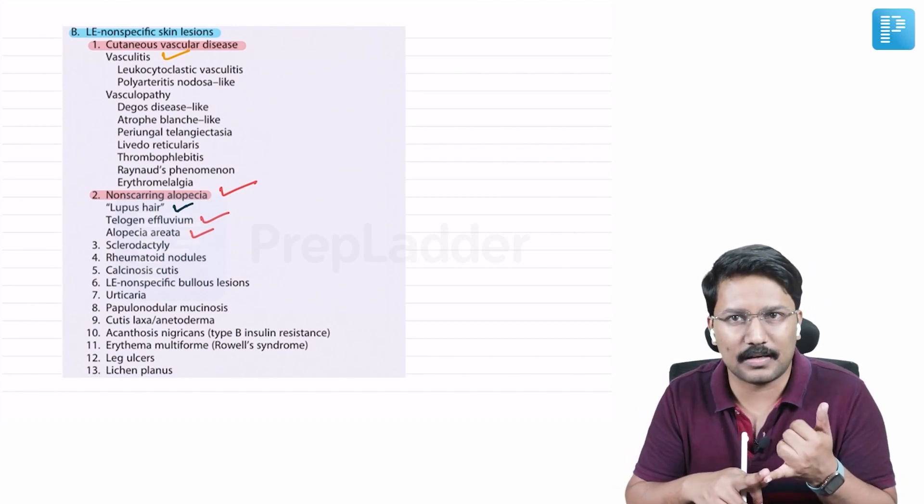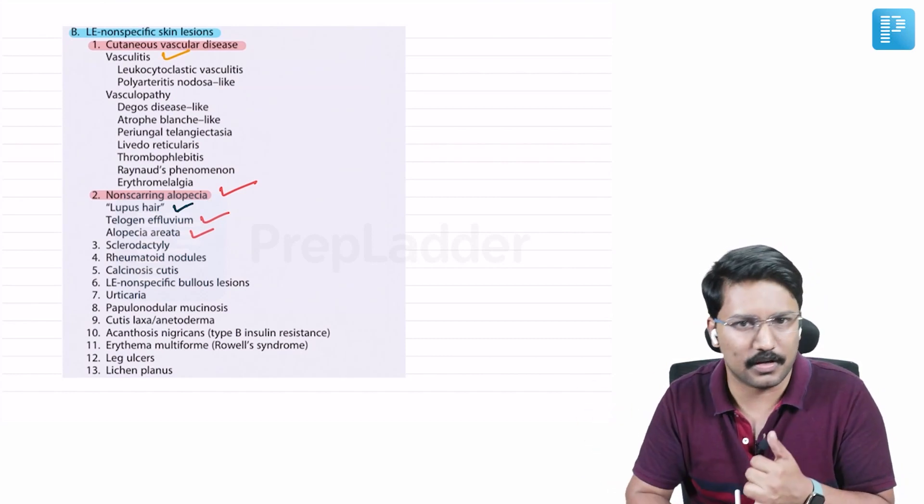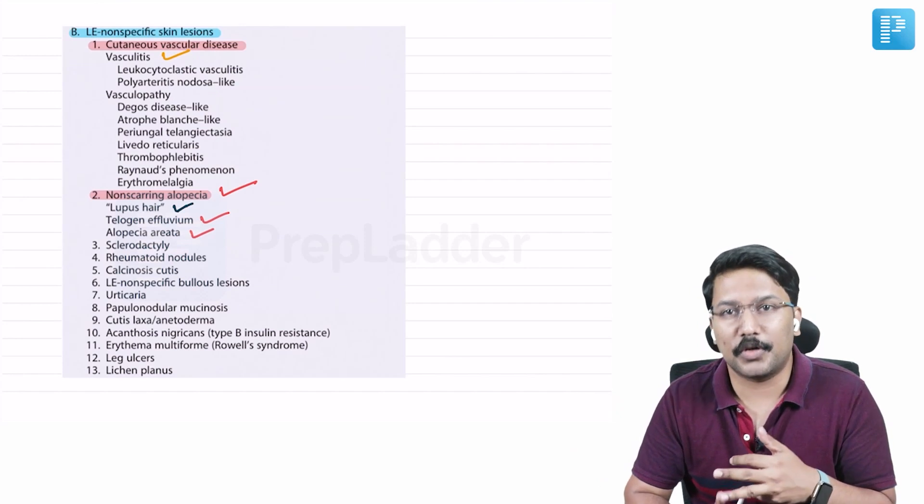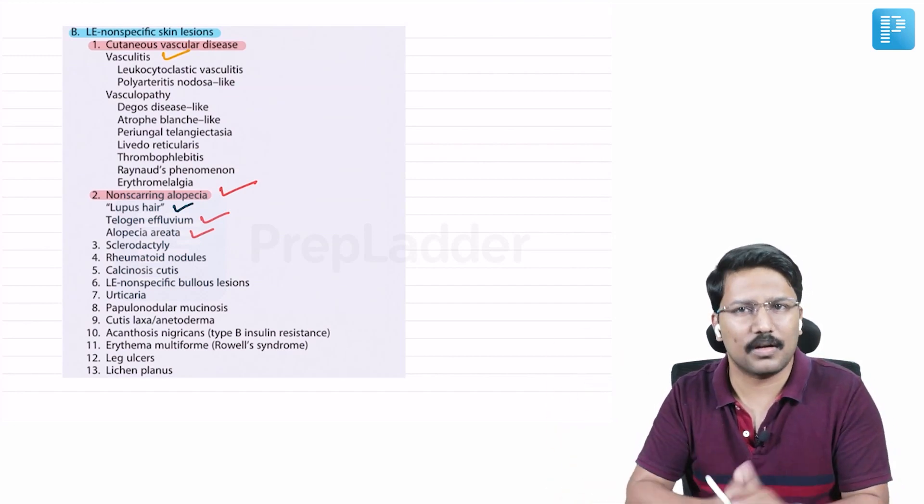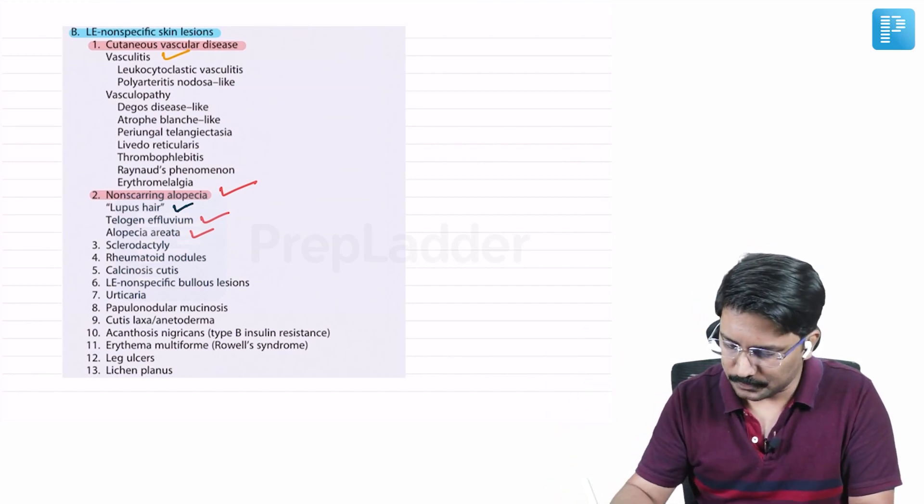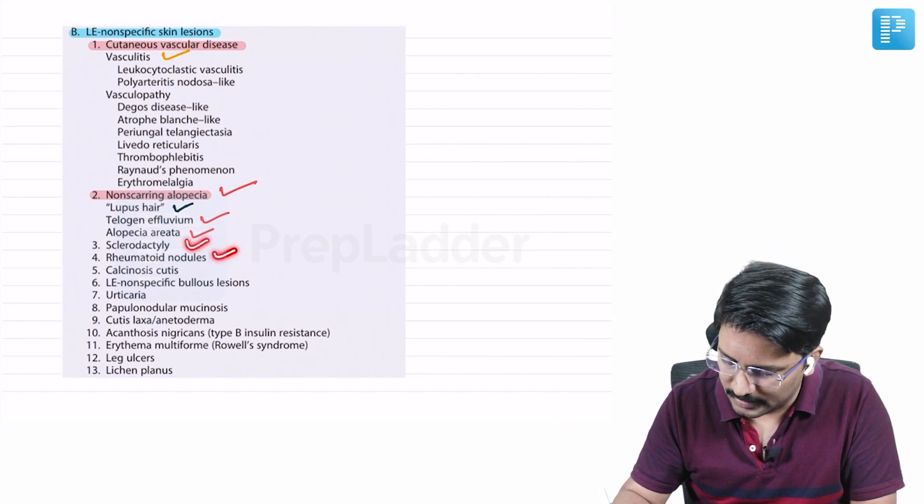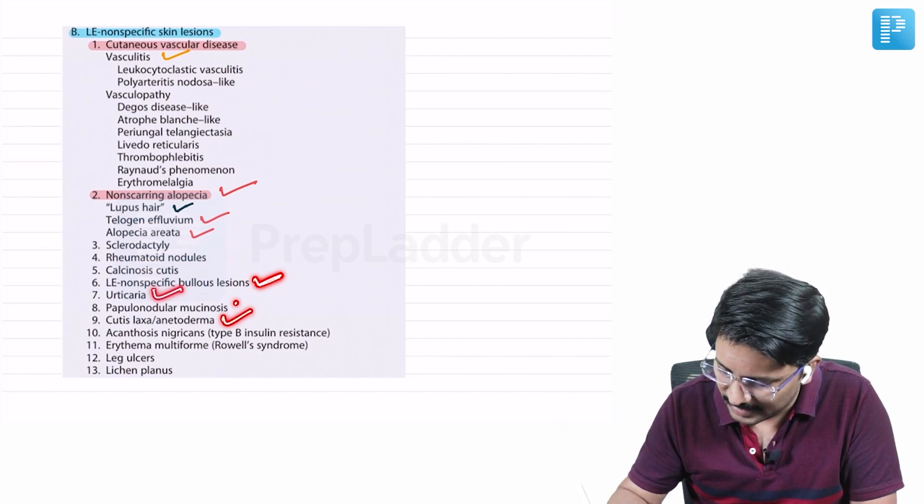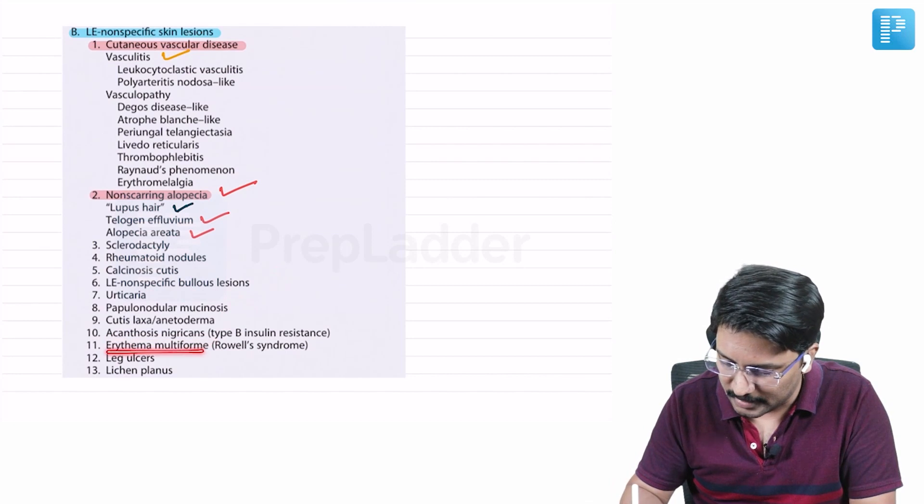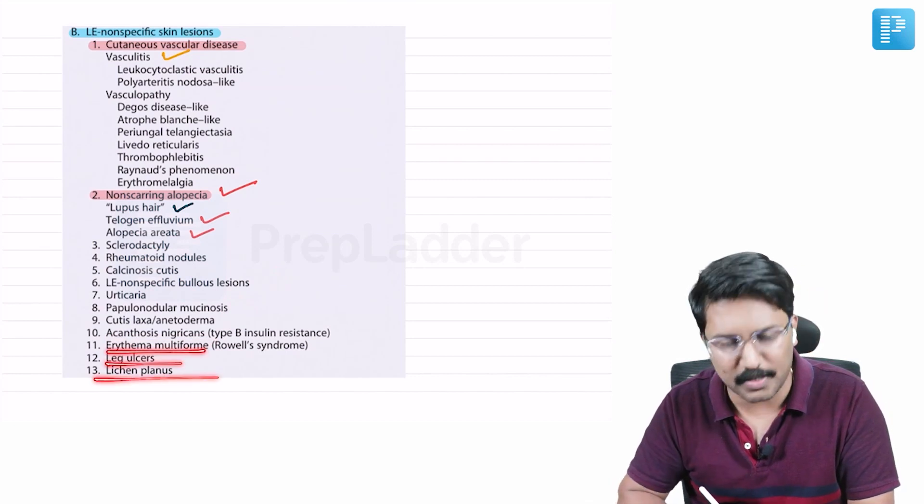Other than that, patients can develop sclerodactyly, something similar to scleroderma. They can develop rheumatoid nodules, they can develop calcinosis cutis. So almost all manifestations that we talk under scleroderma can occur in patients with SLE. Rheumatoid nodules, sclerodactyly, calcinosis cutis, certain non-specific bullous lesions, urticaria, then cutis laxa, acanthosis nigricans can also occur, erythema multiforme, leg ulcers and lichen planus.